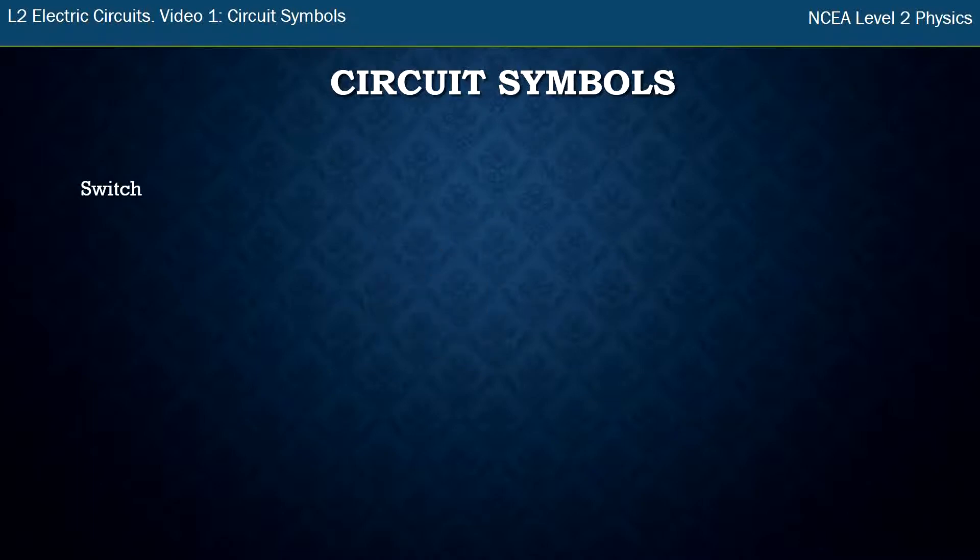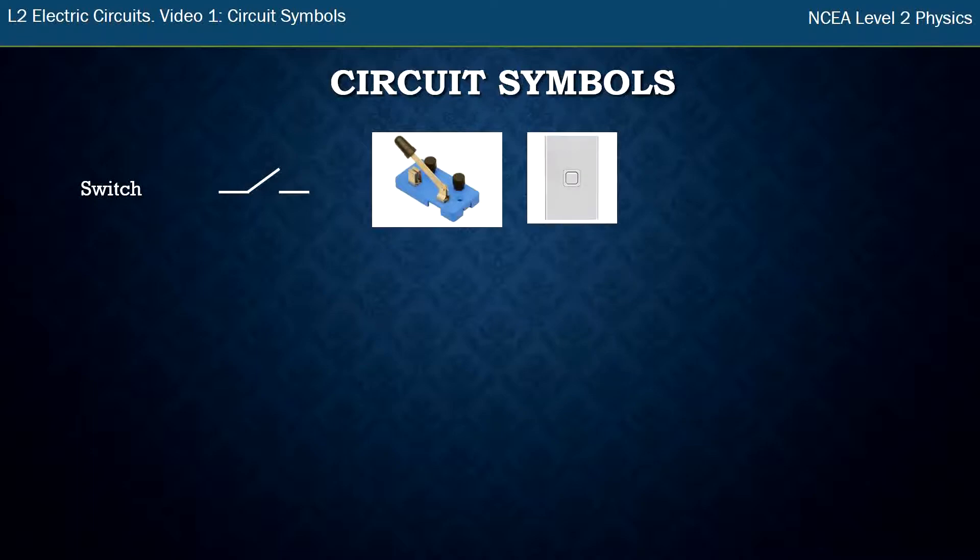Other symbols that come up quite a bit this year is a switch. So a switch in class might look like this, a knife switch. And a switch in your house looks like this. They do exactly the same thing. They just change and break contact between two metal bits and then close the contact again.